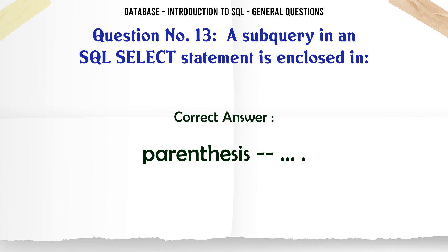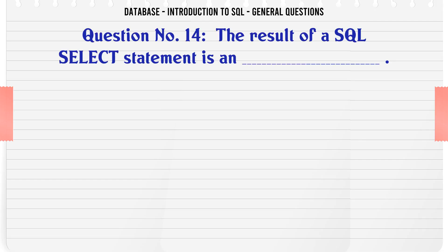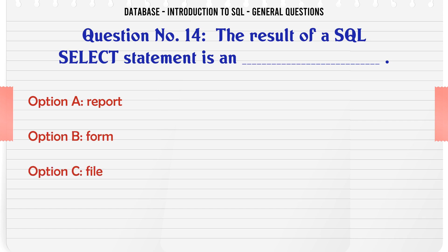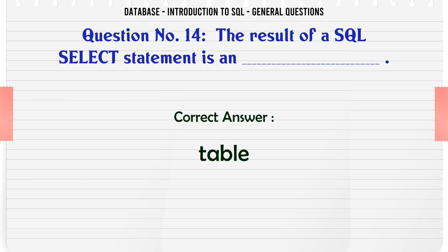The result of a SQL SELECT statement is an: A. Report. B. Form. C. File. D. Table. The correct answer is: table.